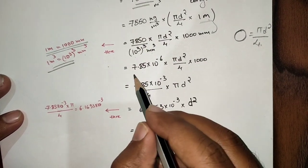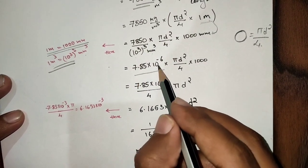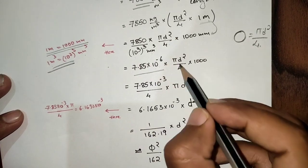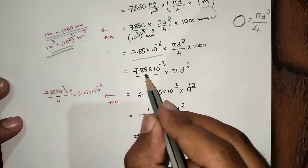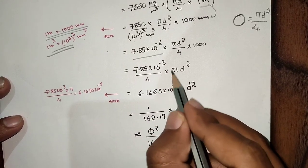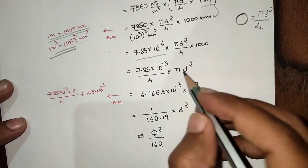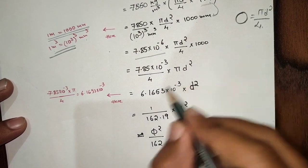So now 7.85 × 10⁻³ by 4 into πd². Now 10⁻⁶ into 10³...